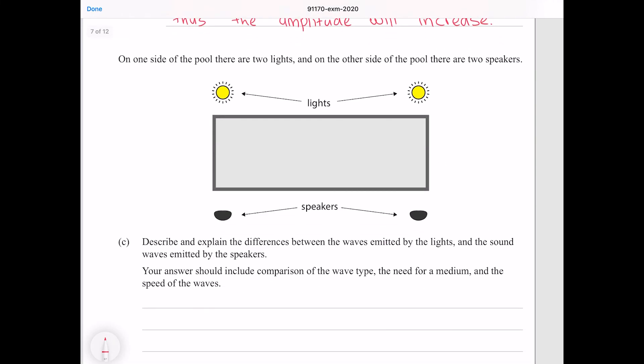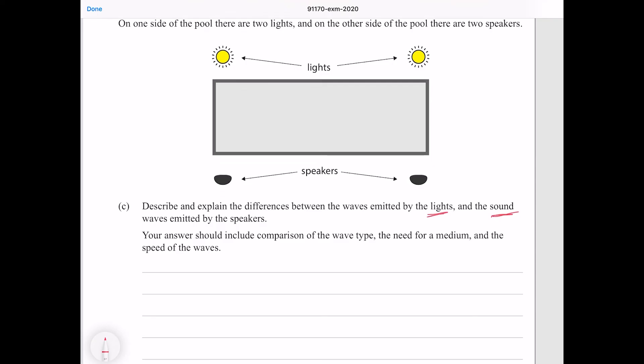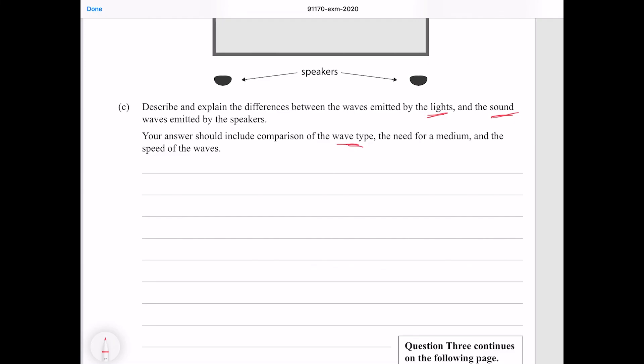On one side of the pool there are two lights and on the other side of the pool there are two speakers. Describe and explain the difference between the waves emitted by the lights and the sound waves emitted by the speakers. Your answer should include comparison of the wave type, the need for a medium and the speed of the waves. So how this is phrased here we're really just asked not to talk specifically in regards to this situation but just to explain the differences between light and sound waves. So when we talk about wave type, well light is a transverse wave whereas sound is a longitudinal wave. This should be something you're already familiar with. Light does not require a medium whereas sound requires a medium to compress.